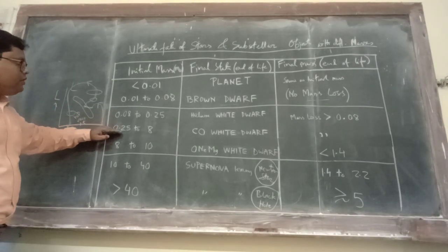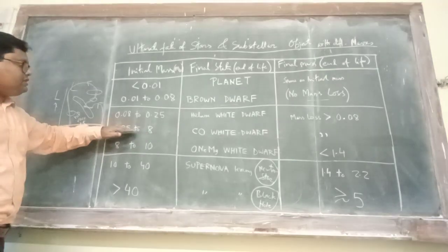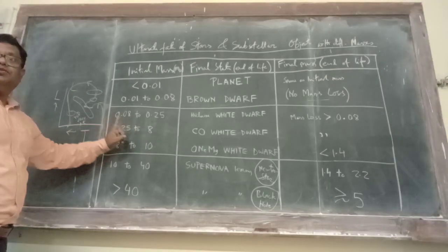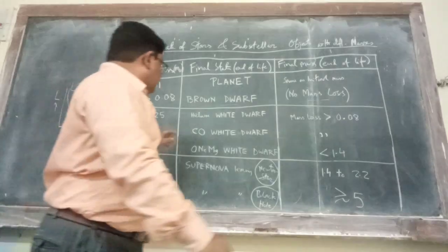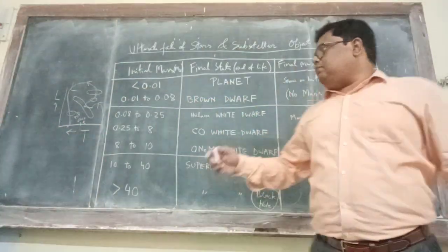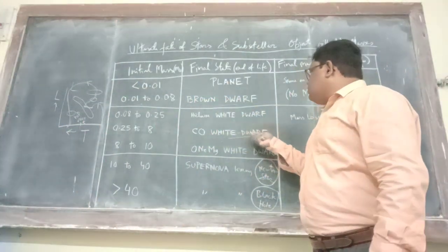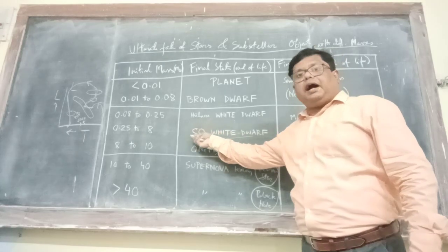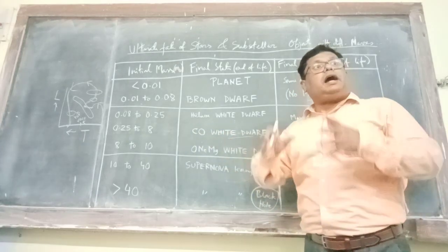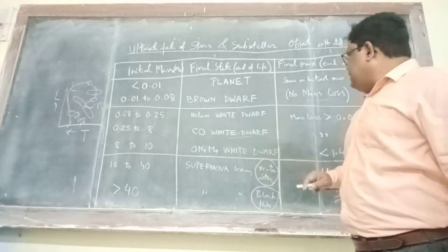Now let me go to a little higher initial mass, say 0.25 to 0.8. Our sun is in this range. Sun is one solar mass. So here we will talk about white dwarfs which are made up of mostly carbon and oxygen. So this is called carbon oxygen white dwarf.